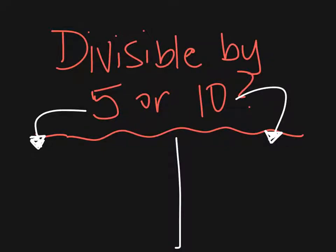This screencast is going to talk about the divisibility rules of 5 and 10 — looking at a number and knowing whether it can be divided by 5 or divided by 10. These are pretty simple rules. You just need to look at the number that's in the ones place, and that's going to help you figure out whether or not a number is divisible by 5 or 10.